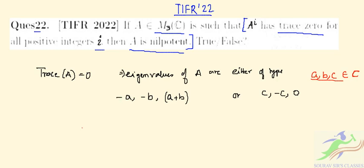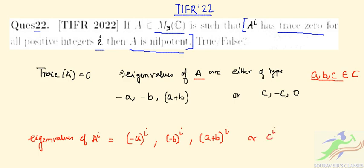Then the eigenvalues of A^i will be (-a)^i, (-b)^i, (a+b)^i, or c^i, (-c)^i, 0.